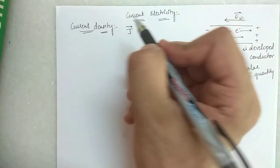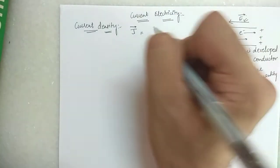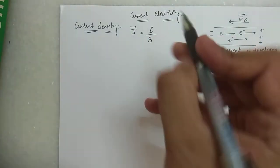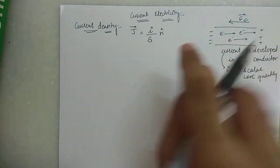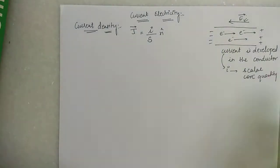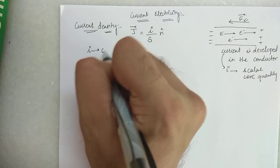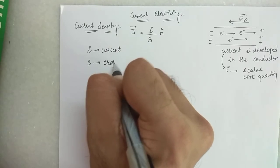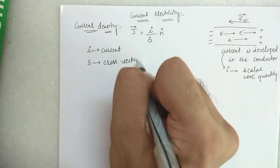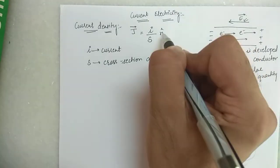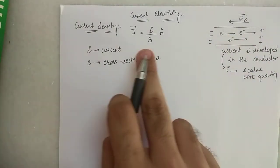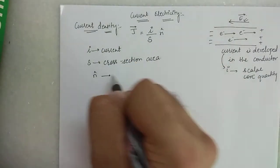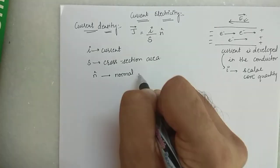Current density — the formula — is basically the current flowing through the conductor divided by the cross-section area. Here, I is the current through the conductor, S is the cross-section area through which current is flowing, and n̂ is the normal vector to that area.